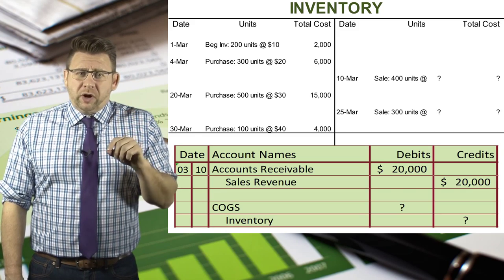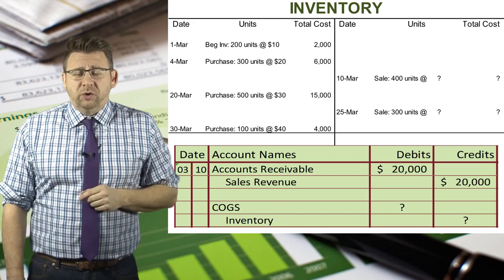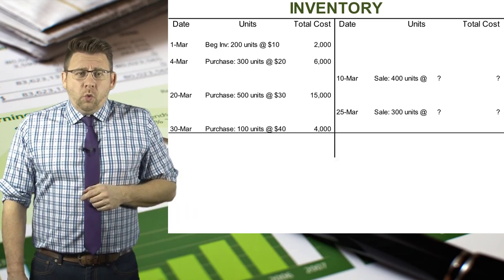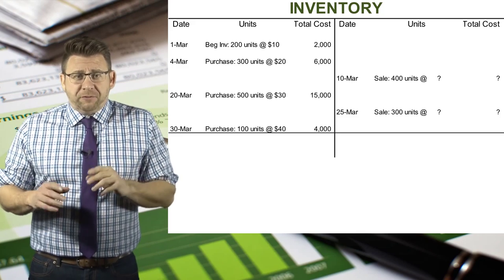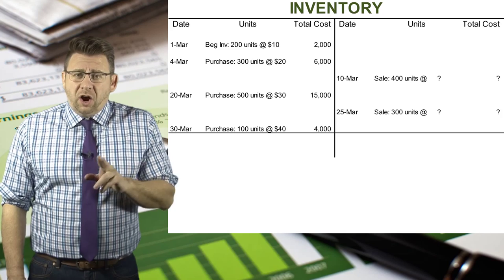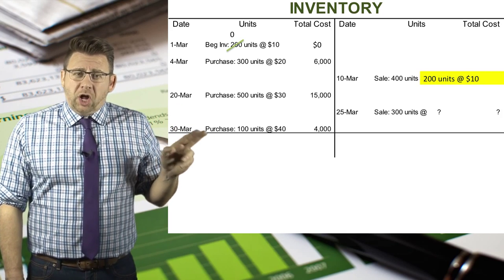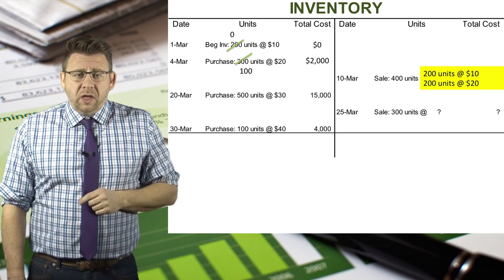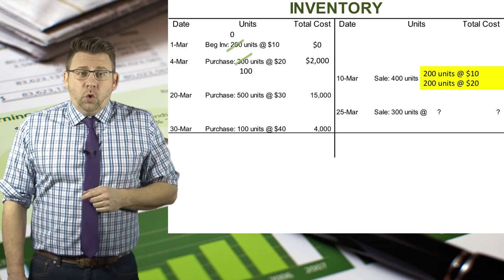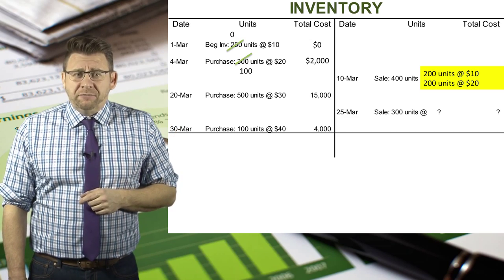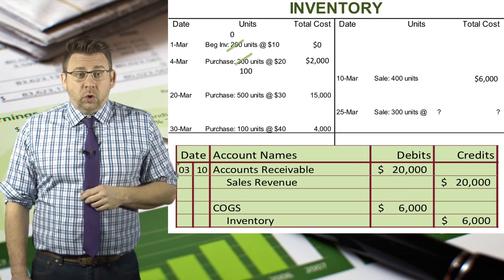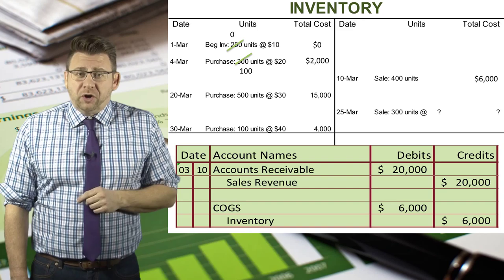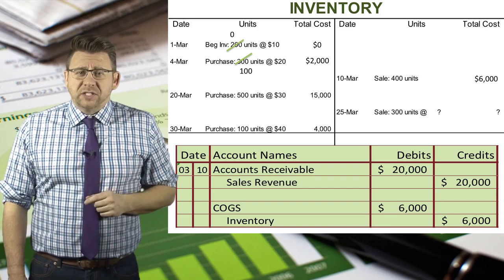So we know on March 10, we sold 400 units at $50 each, which gives a sales revenue of $20,000. But how much is cost of goods sold? Let's apply FIFO. We sold 400 units — first in, first out — so the first units in are the 200 of beginning inventory. We sold all 200 units of beginning inventory, leaving zero. However, that doesn't account for all 400 units. The next oldest items are from March 4. We sold 200 units from there, leaving 100 in inventory. So we assume the 400 units sold on March 10 came from 200 units of beginning inventory and 200 units from the March 4 purchase.